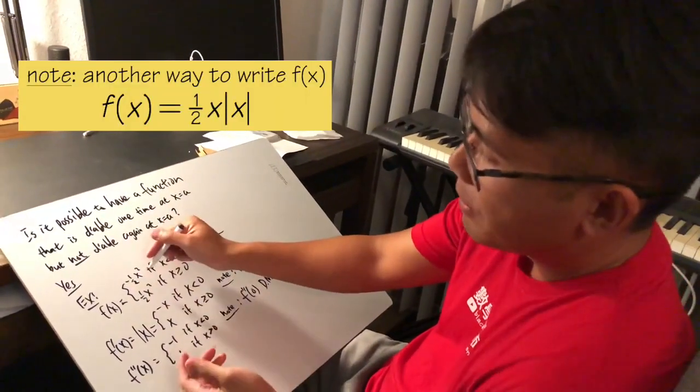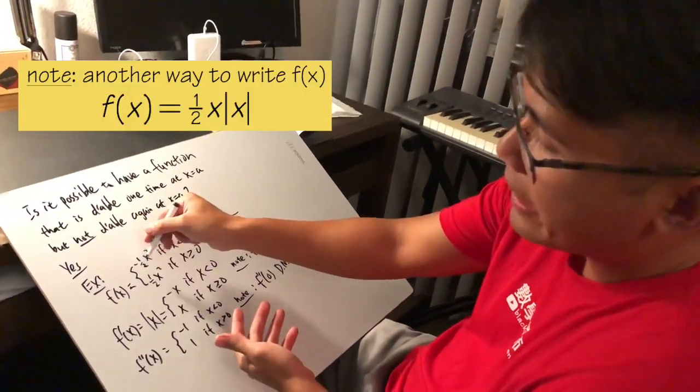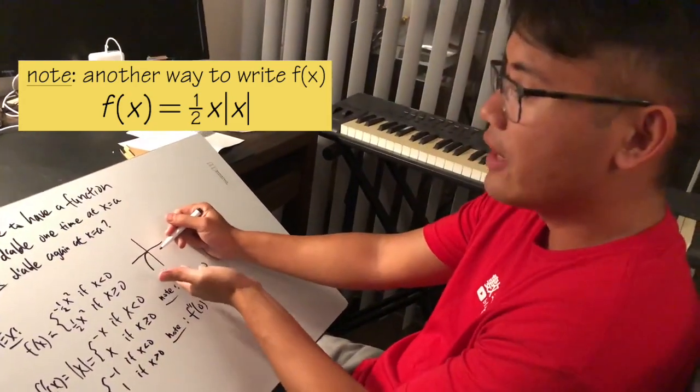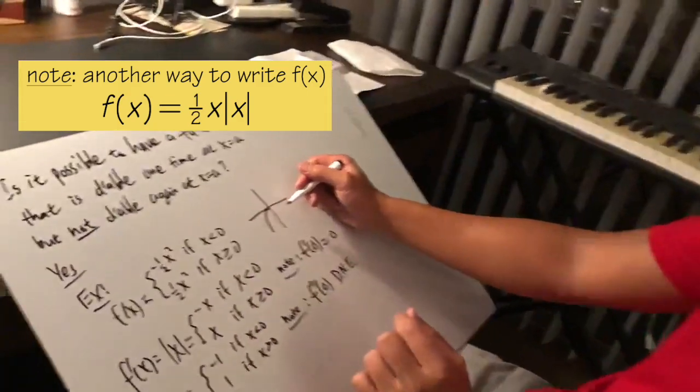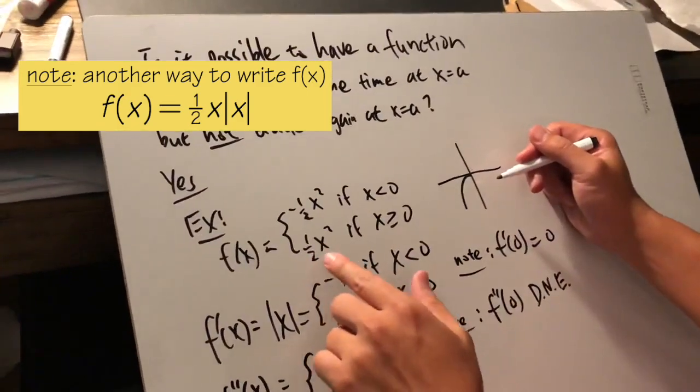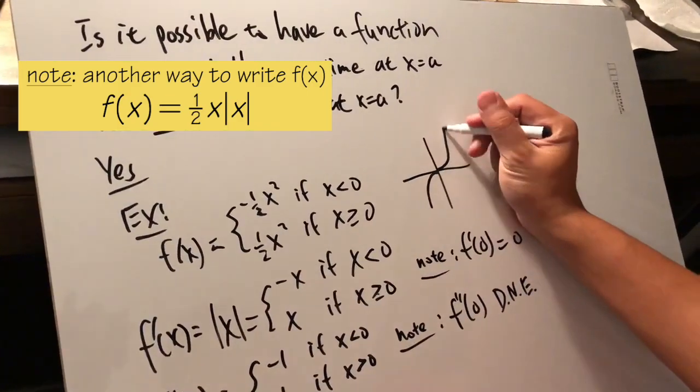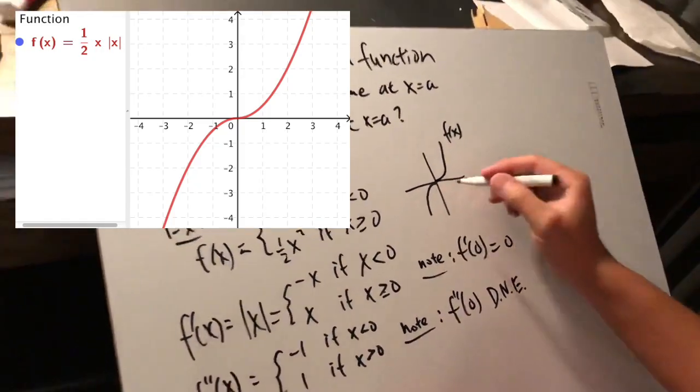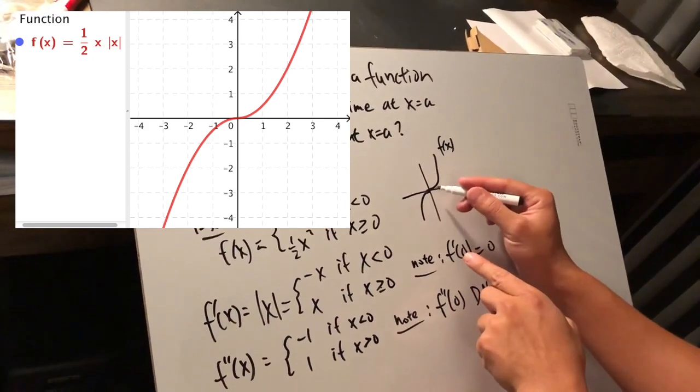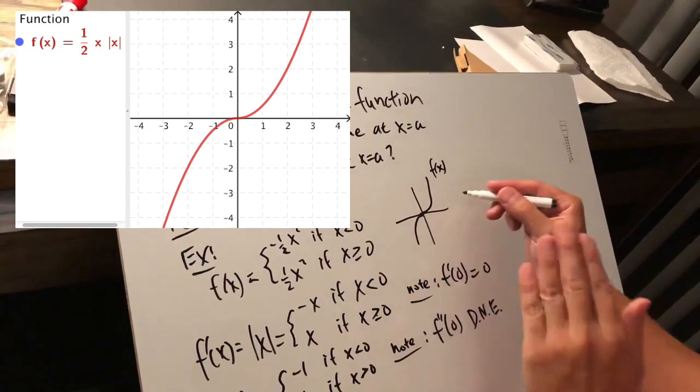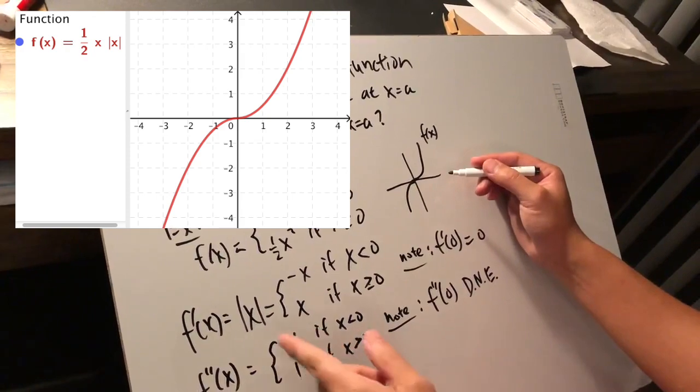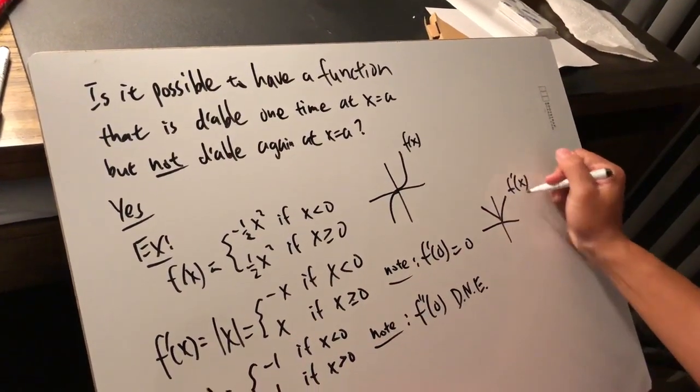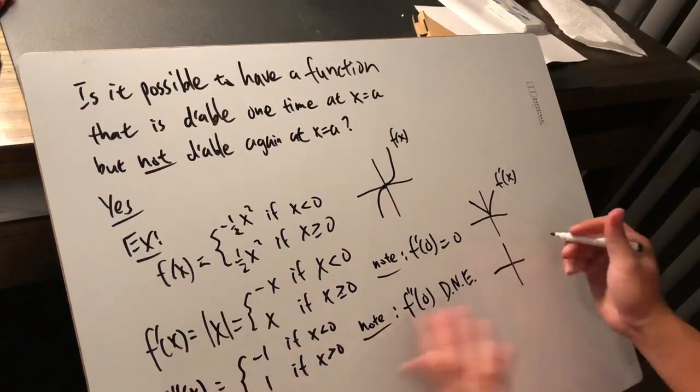This right here is the parabola, but you have the negative 1 half, so it's going to look like this. This is the negative half x squared when x is less than 0. And then on the other hand, when you have 1 half x squared, you have this. So this is how this function looks like. And clearly you can see, the first derivative is actually 0 right here, and this is legitimate. But the moment you differentiate this, you get the famous absolute value of x. That's f' of x.